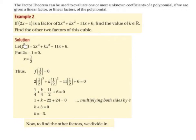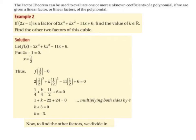So we let f of x equal 2x cubed plus kx squared minus 11x plus 6. Then we're going to let 2x minus 1 equal to 0 and solve for x. We bring the minus 1 over the equal sign — it becomes plus 1 — then divide by 2. So x is equal to a half.